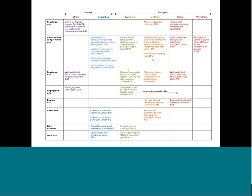This is the grid from the ACMG paper that has 28 different criteria, separated out into different evidence category types on the left-hand side. Each criterion is separated by whether it supports a benign versus pathogenic interpretation. Each criterion is given a code where the first letter represents pathogenic or benign, and the second letter corresponds to the strength — PS is pathogenic strong, PM is pathogenic moderate. How you reach a classification is by combining the different strengths of evidence.